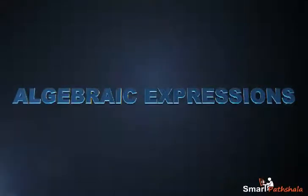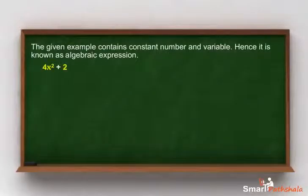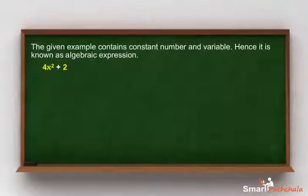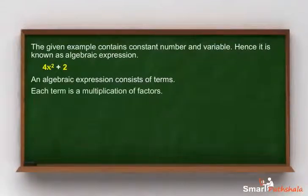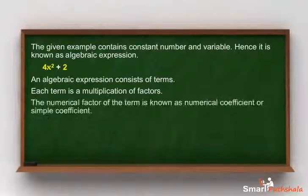Algebraic expressions: this module will explain the basics of algebraic expressions. The given example contains a constant number and variable, hence it is known as an algebraic expression. An algebraic expression consists of terms; each term is a multiplication of factors. The numerical factor of the term is known as the numerical coefficient, or simply coefficient.